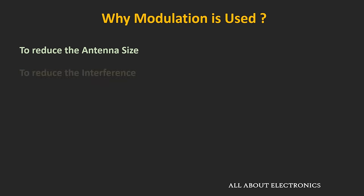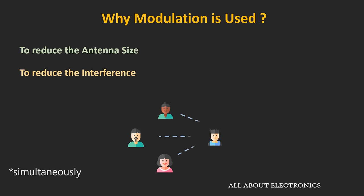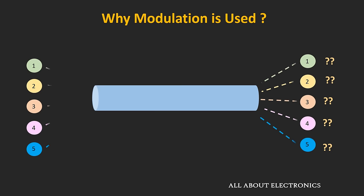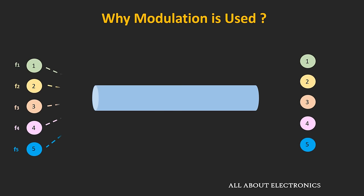The second reason is to reduce interference. Just imagine if three persons are talking to the same person in a single room — that person won't get anything clearly. Similarly, if five different voice signals in the same frequency range are transmitted without modulation through a single channel, there will be interference between them, and at the receiver, we won't get the transmitted signal. But if each signal is modulated at a different carrier frequency, and all carrier frequencies are relatively far away from each other, then there won't be any interference, and all signals can be demodulated at the receiver.